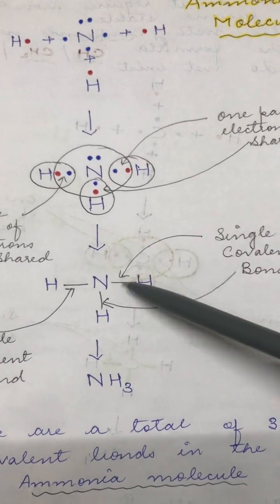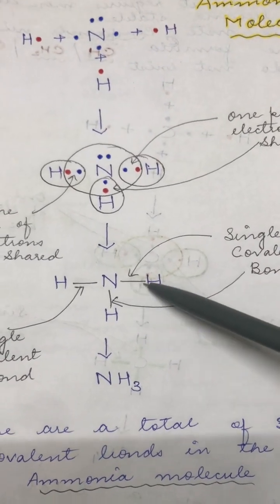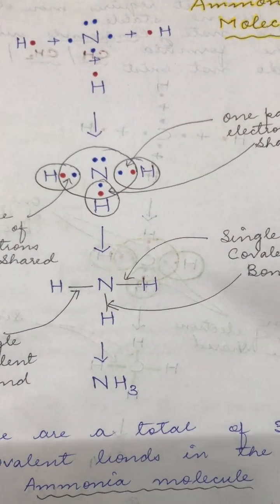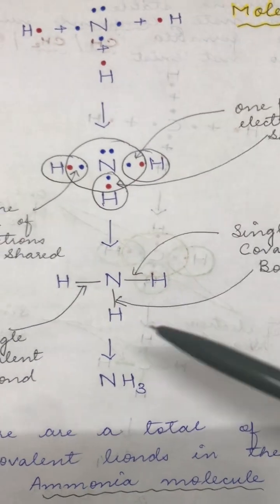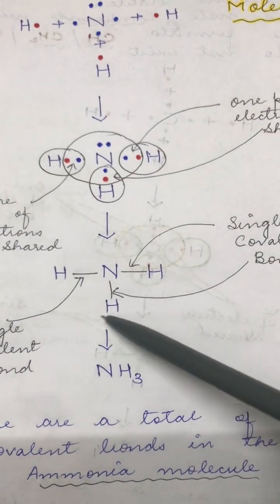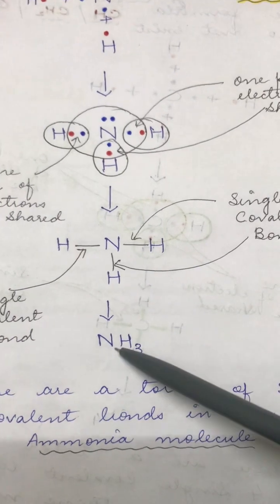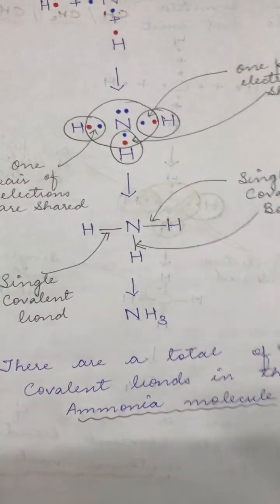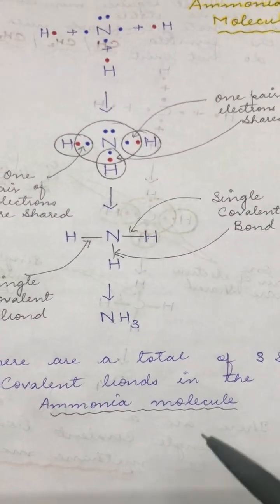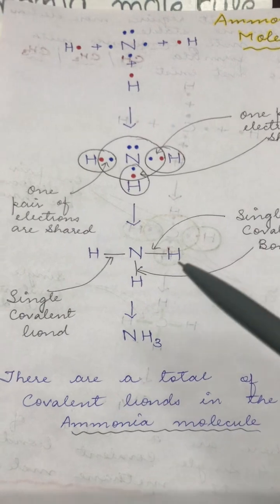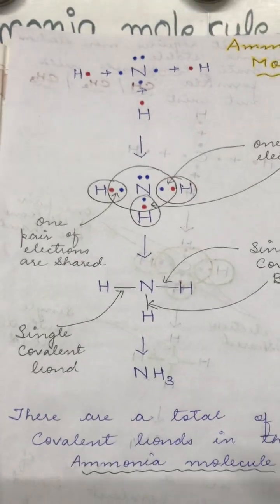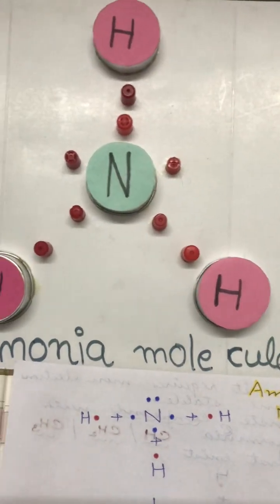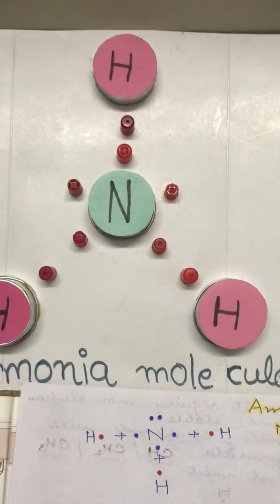Three single covalent bonds are formed between nitrogen and the hydrogen atoms. We show each bond with a line, where a single line represents a single covalent bond. Since three hydrogen atoms are involved, the formula of ammonia becomes NH3, and there are a total of three covalent bonds in the molecule.